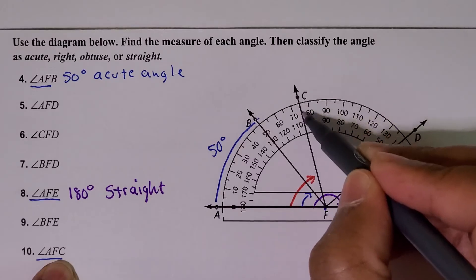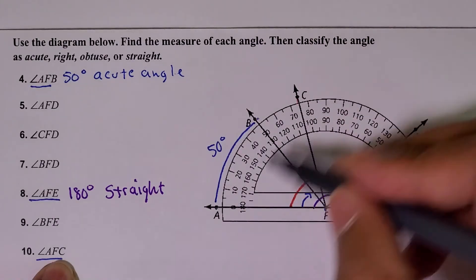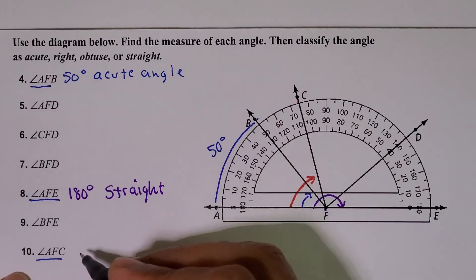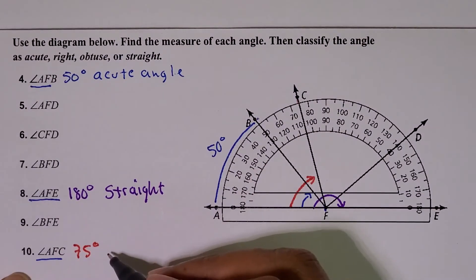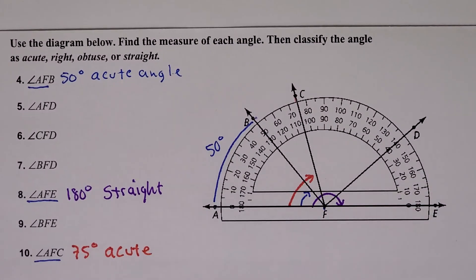So I'm assuming you can guess the measure of that angle. That angle has a measure of 75 degrees. We also know that 75 is less than 90, so that makes this angle also an acute angle. I hope that helps with the assignment. Until next time.